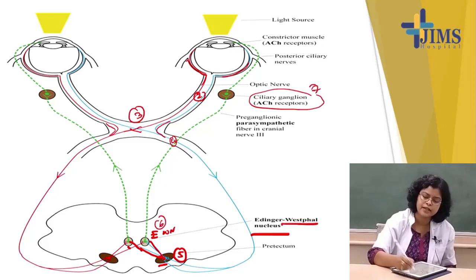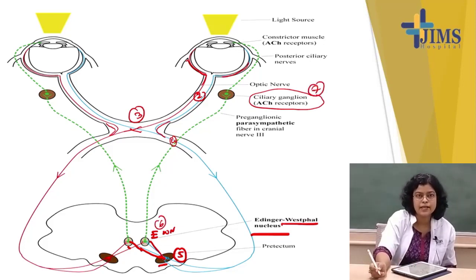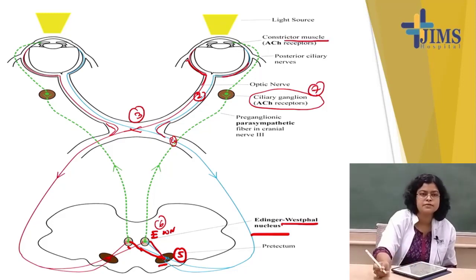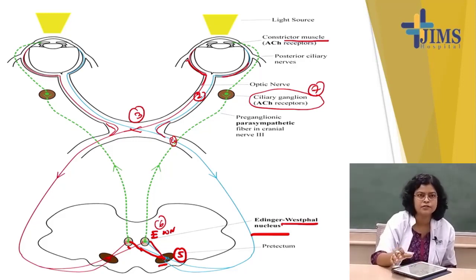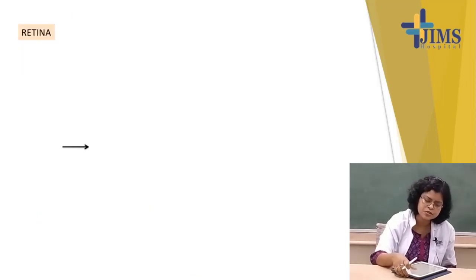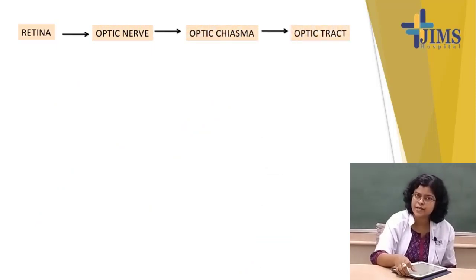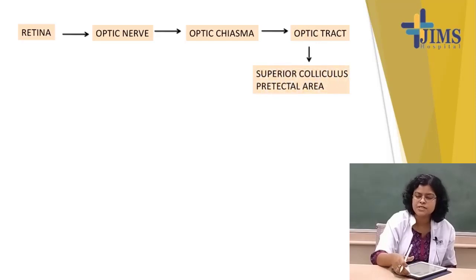From the ciliary ganglia, the post-ganglionic parasympathetic fibers arise and end in the constrictor muscle, leading to constriction of the pupil. So this is the pathway for light reflex: from retina, optic nerve, optic chiasma, optic tract — from the optic tract it will reach the superior colliculus and pre-tectal area.